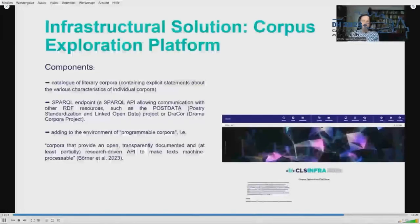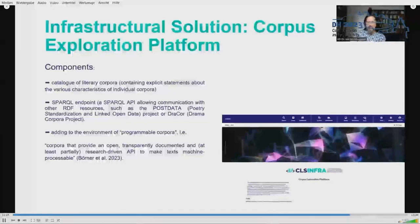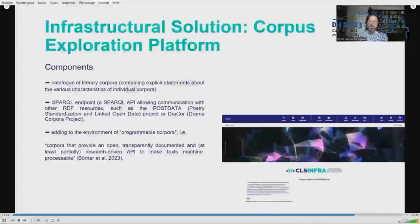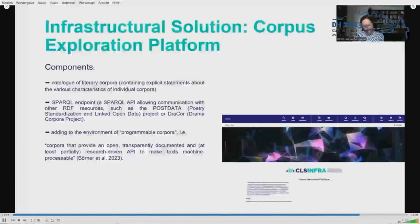CEP will consist of several components, but its core is a catalogue of literary corpora which, in addition to a list of resources, contains explicit statements about the various characteristics of individual corpora — in particular, information about the internal structure of documents, such as the presence of explicitly annotated poetic devices. By recording provenance information, CEP will allow even conflicting statements about a resource to be made, which can be traced and evaluated individually.